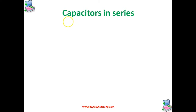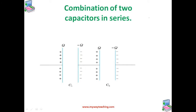The first form is capacitors in series. As you can see in this figure, the capacitors C1 and C2 are combined in series — one end of the capacitor is connected to another end. The left plate of C1 and the right plate of C2 are connected to the two terminals of a battery.